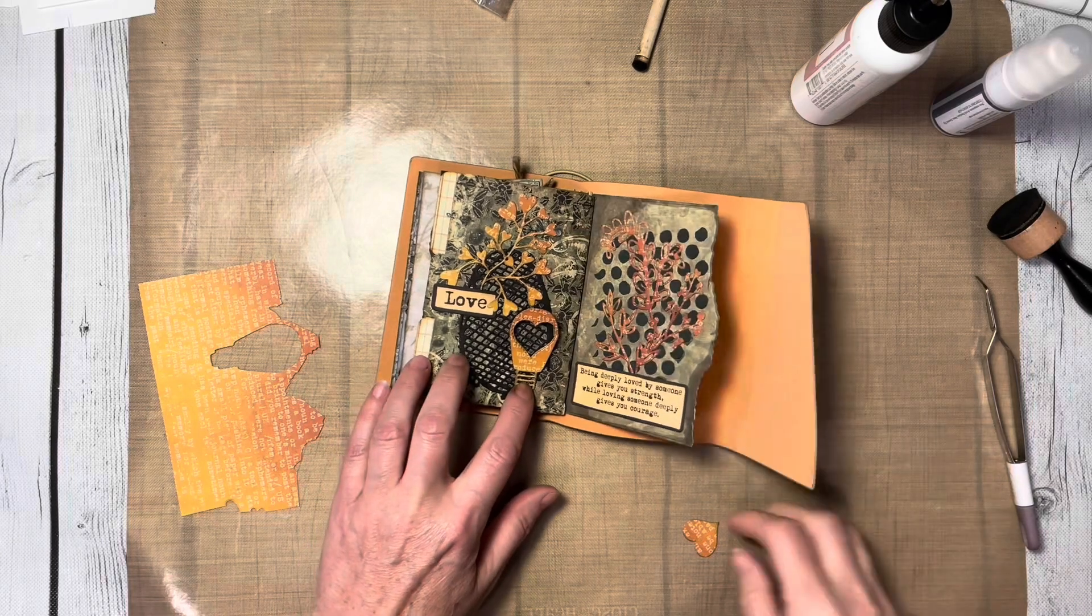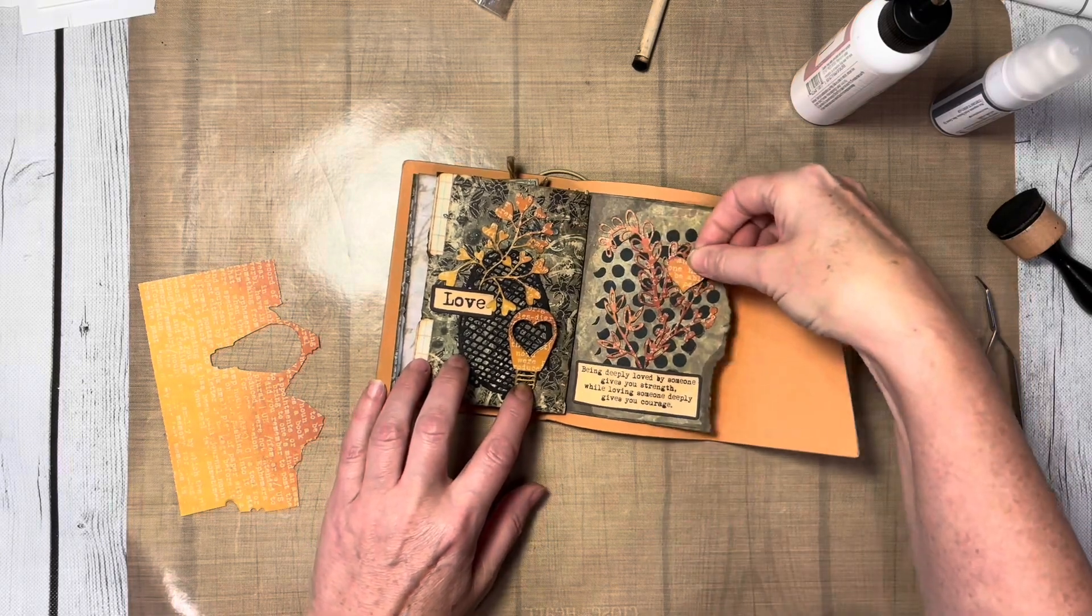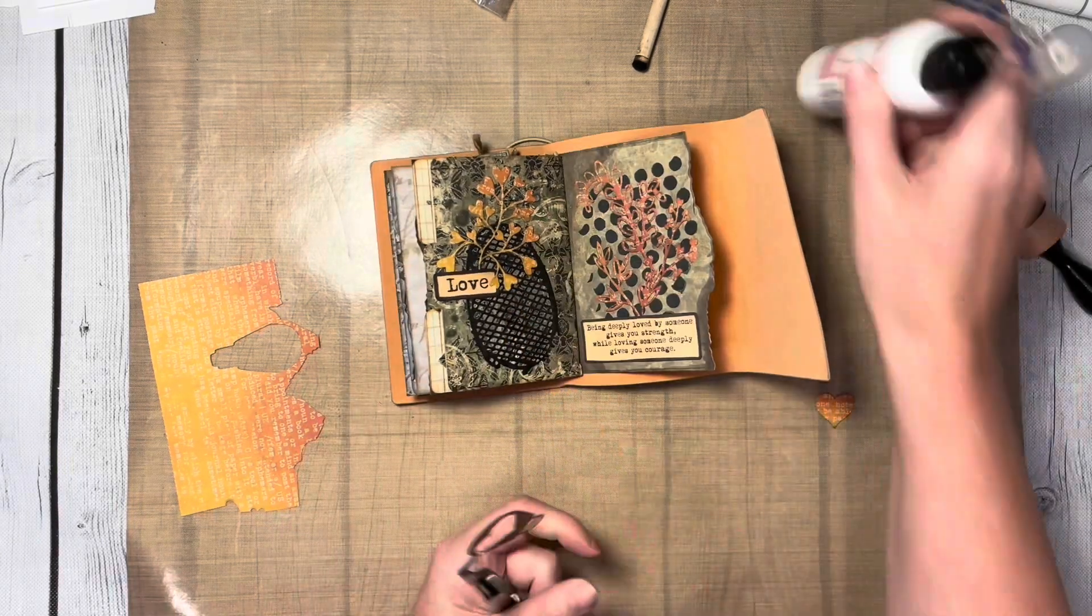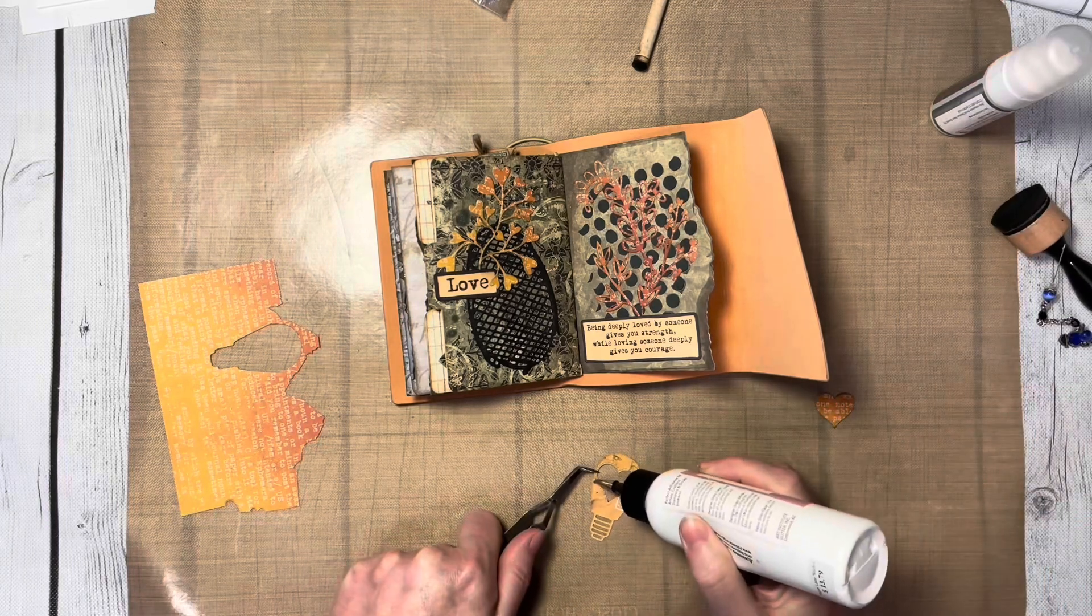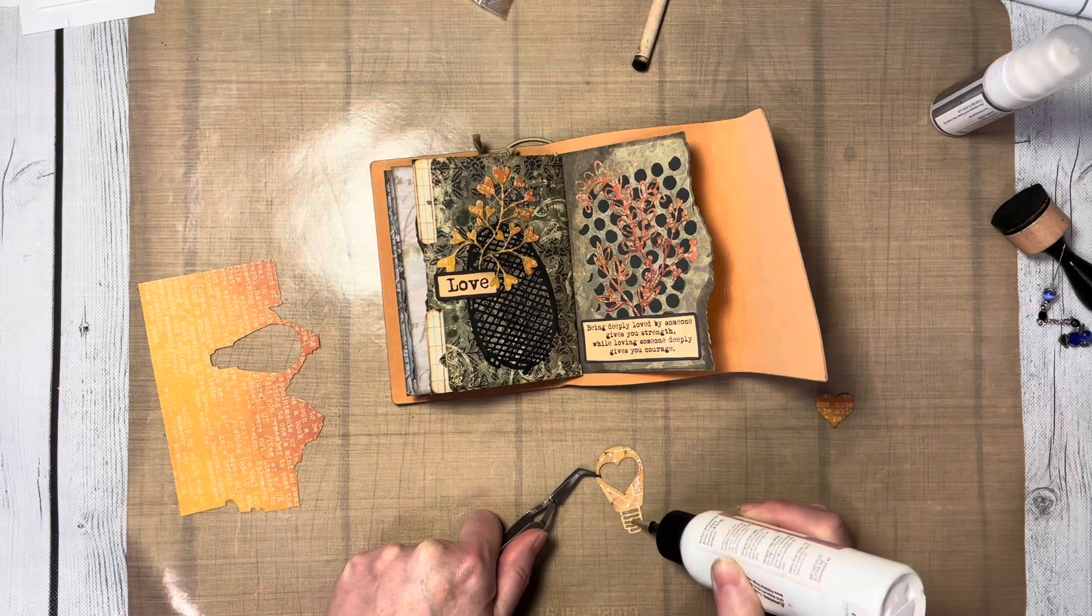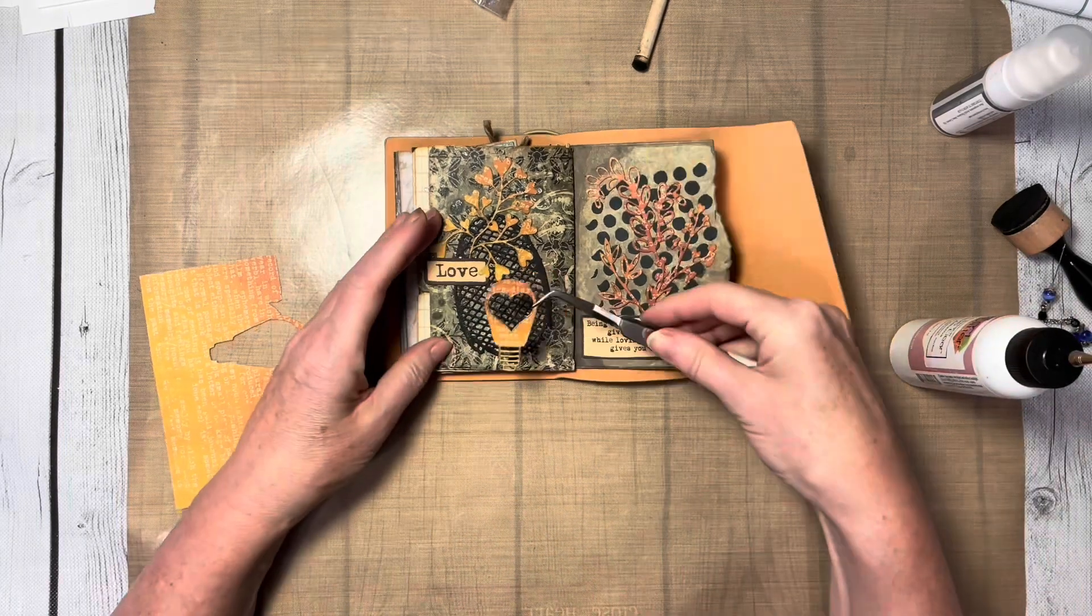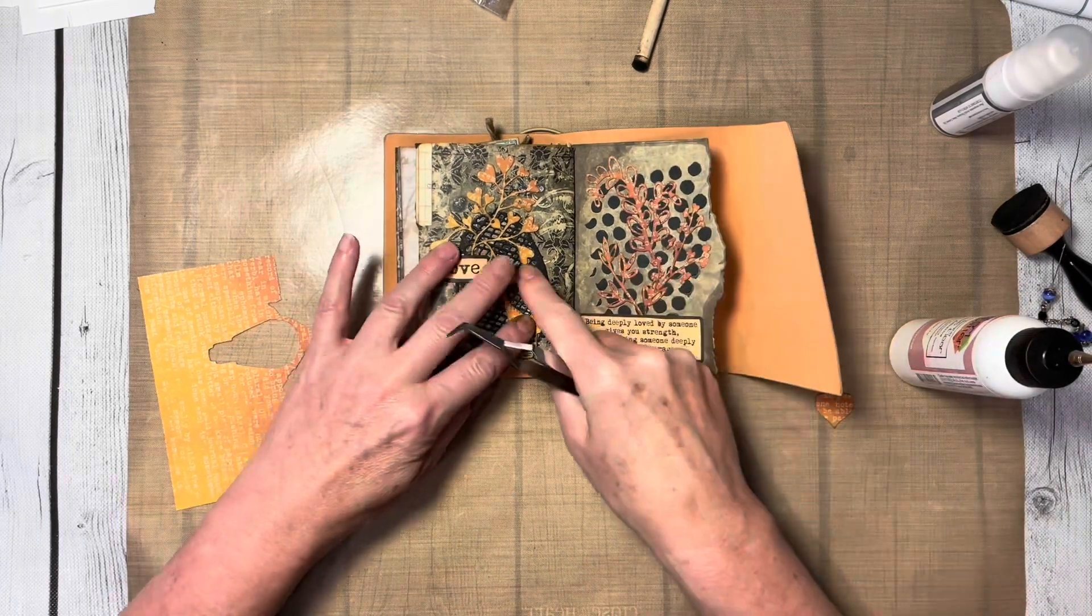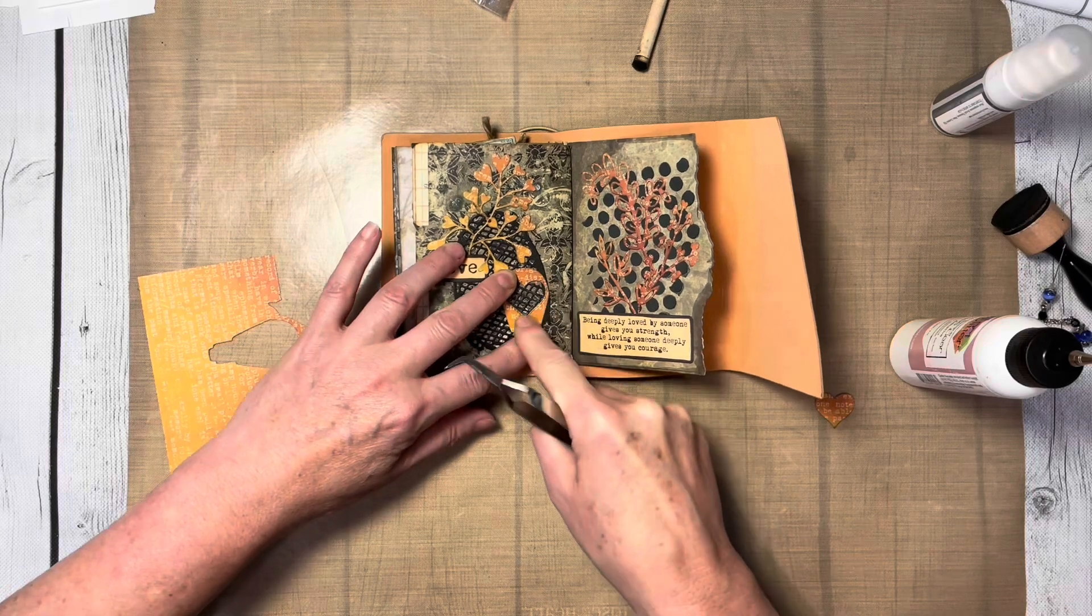I like the placement of the light bulb, and the heart is going to fit nicely on my other page. I'm adding some more liquid adhesive to that die so I can stick it down onto the page. I think that finishes off that page nicely.